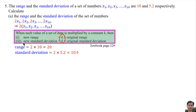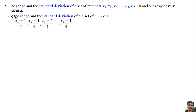For the standard deviation: the new standard deviation equals k times the original standard deviation. k is 2 and the original standard deviation is 5.2, so 2 times 5.2 equals 10.4. Therefore for part A, the new range is 20 and the new standard deviation is 10.4.